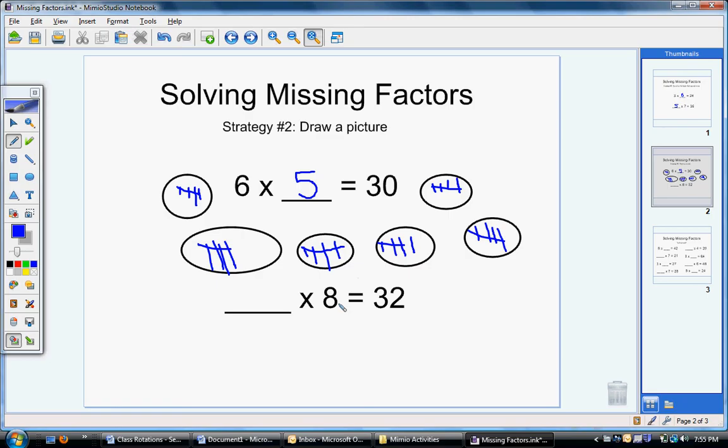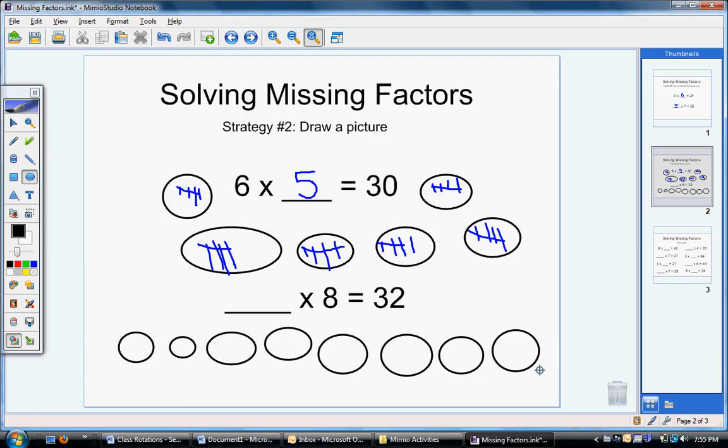I could do the same thing here. I know that with multiplication, it's adding the same number over and over and over again. So if I take a number and add it together eight times, I'm going to end up with thirty-two. So I can start by drawing those eight circles: one, two, three, four, five, six, seven, eight, because that's the factor that I do know.